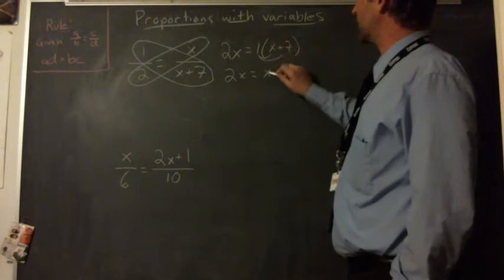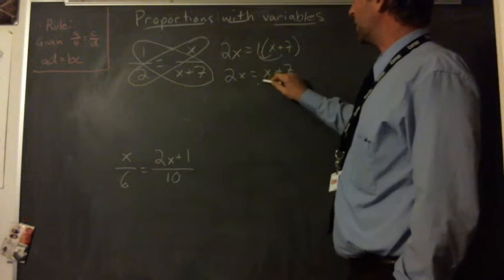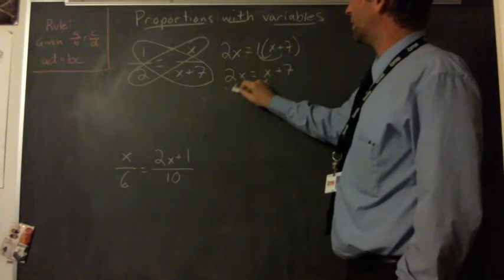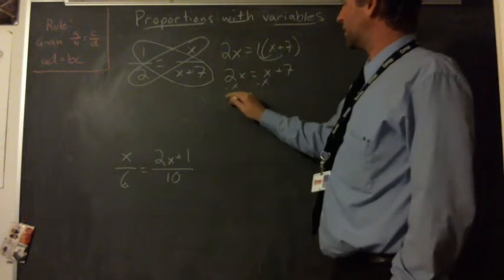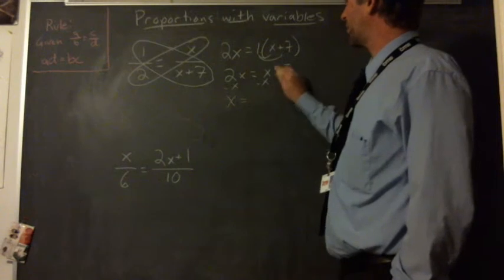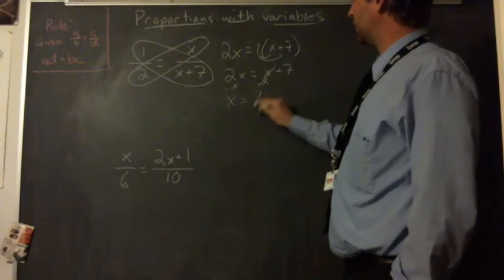One times x is x. One times seven is seven. Let's subtract off the smaller one. Two x minus x is x. Bit of canceling. X equals seven.